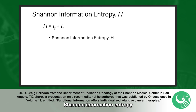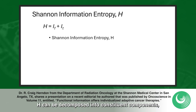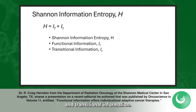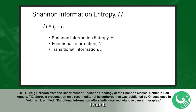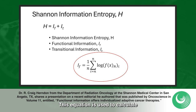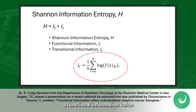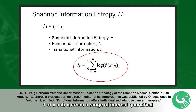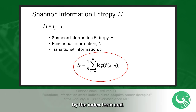Shannon information entropy, H, can be decomposed into constituent components, namely functional information, i sub f, and transitional information, i sub t. This equation is used to calculate a functional information value for the normalized mathematical model, f of x sub n, across a range of interest quantified by the index term, n.